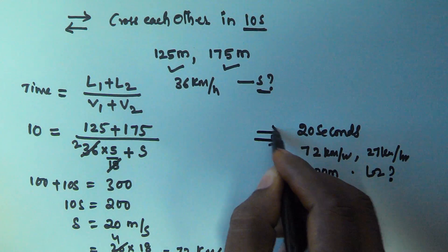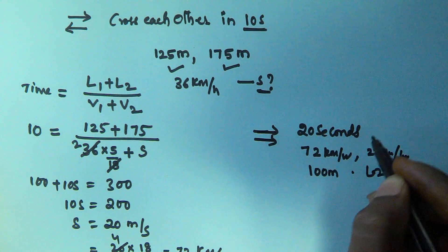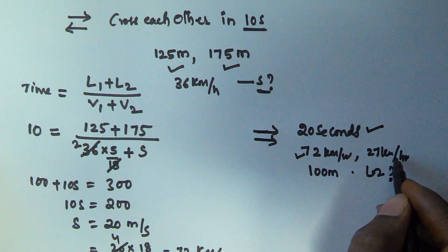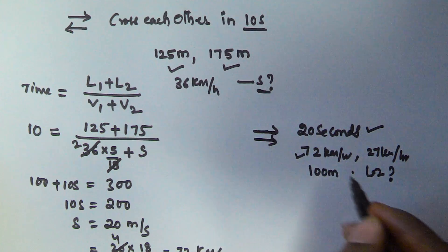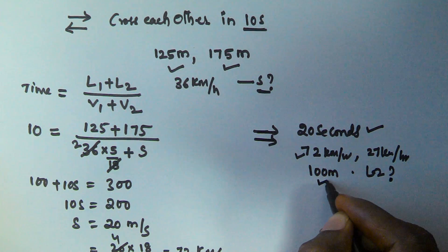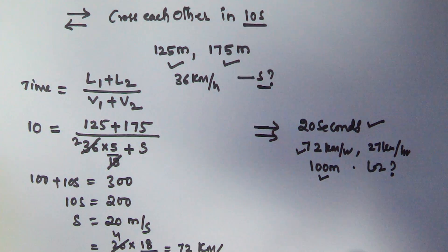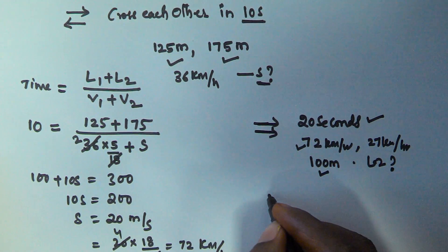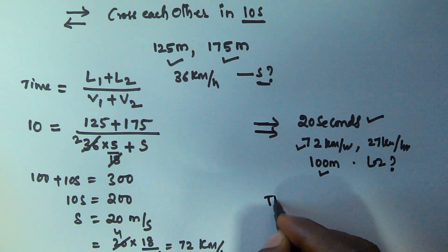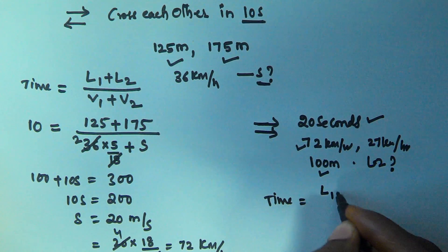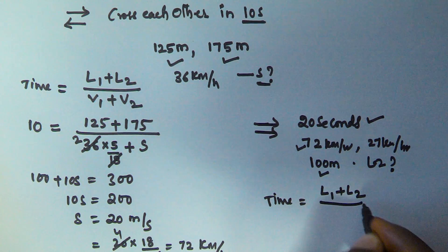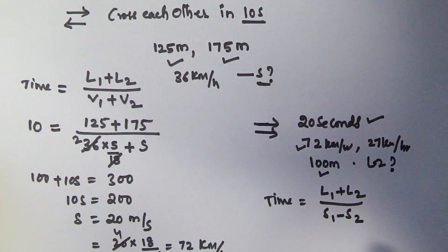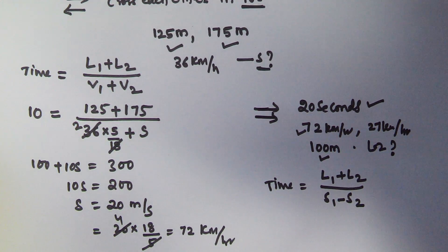Both trains are moving in the same direction, they cross each other in 20 seconds. The speed of the first train is 72 km/h, the speed of the second train is 27 km/h, and the length of the first train is 100 meters. We have to find the length of the second train. If both trains move in the same direction, the time to cross is given by (L1 + L2) / (S1 - S2), because the relative speed is the subtraction of both speeds.